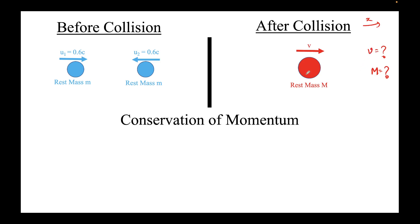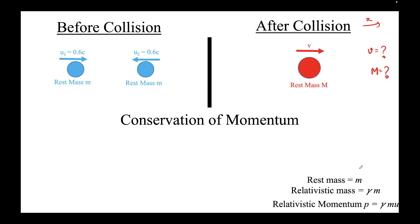The first equation uses conservation of momentum. For relativistic kinematics, momentum is given by p equals gamma times m times u, where m is the rest mass. The total momentum before collision must equal the total momentum after collision: p1-vector plus p2-vector equals p-vector. P1 is gamma-1 times m times 0.6c in the positive i-cap direction.